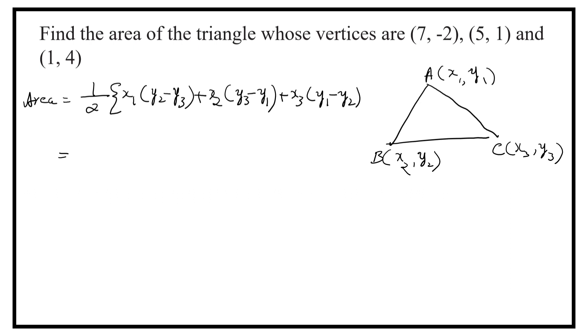Here x1, y1 is (7, -2); x2, y2 is (5, 1); and x3, y3 is (1, 4).